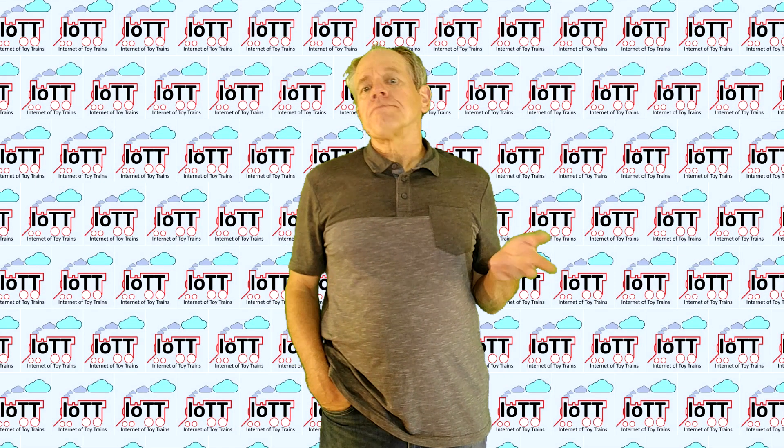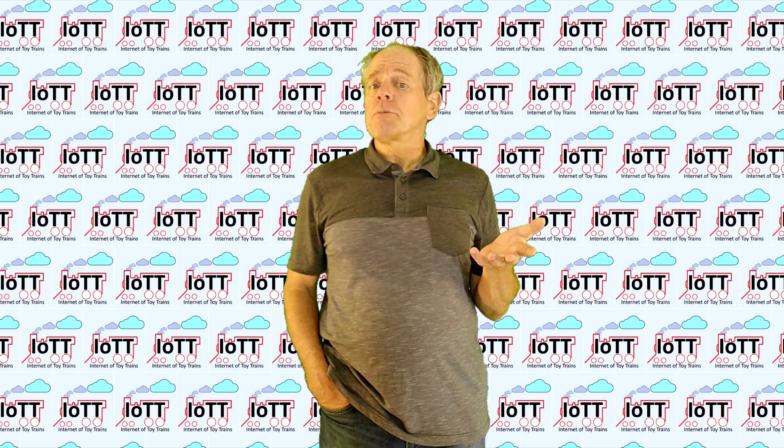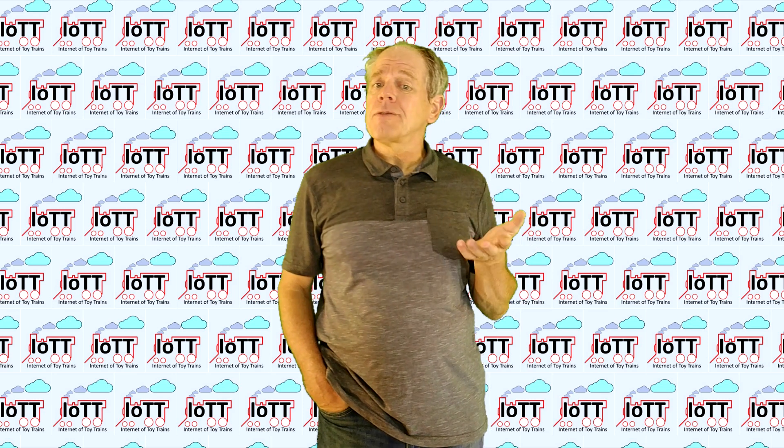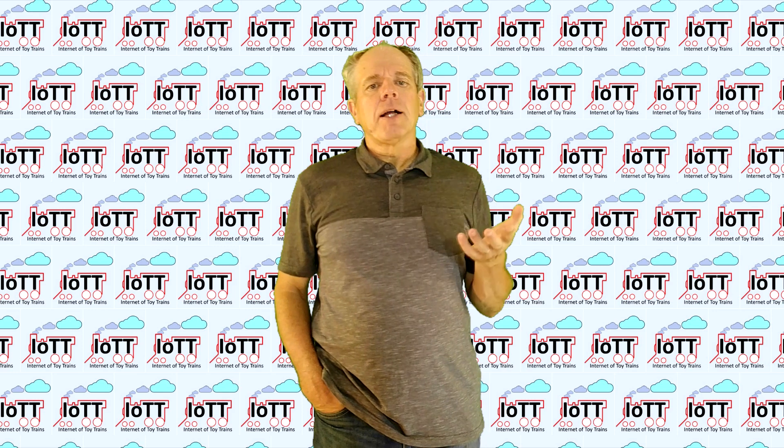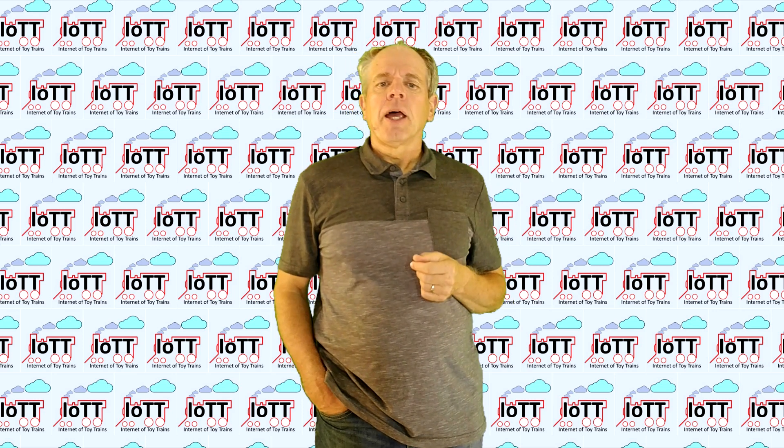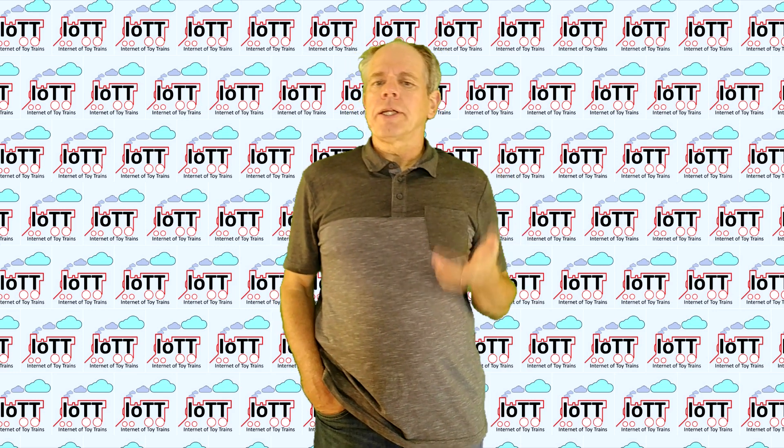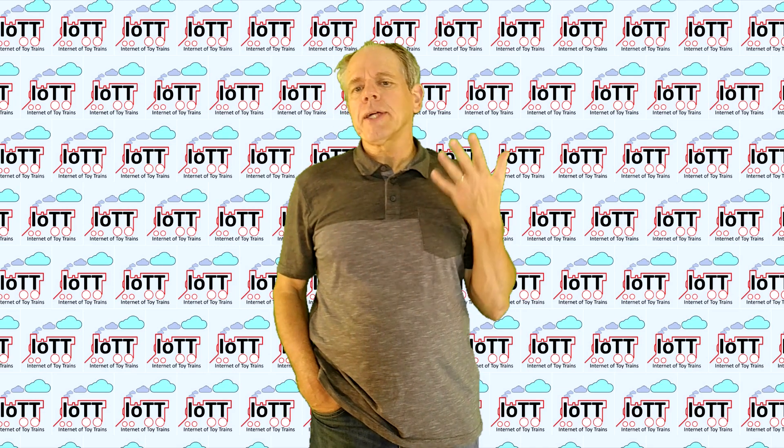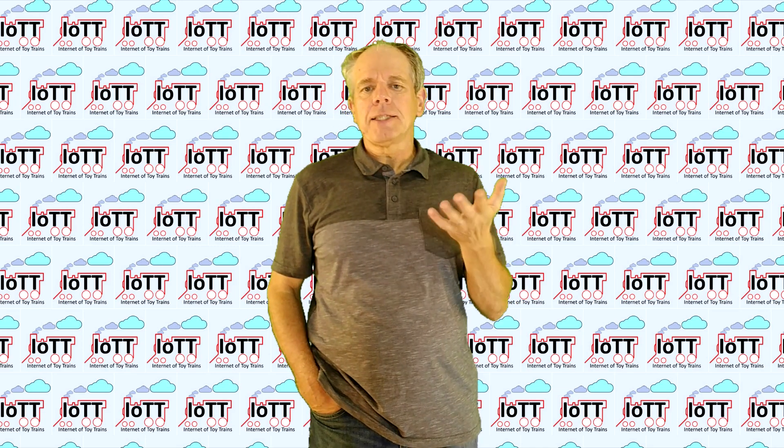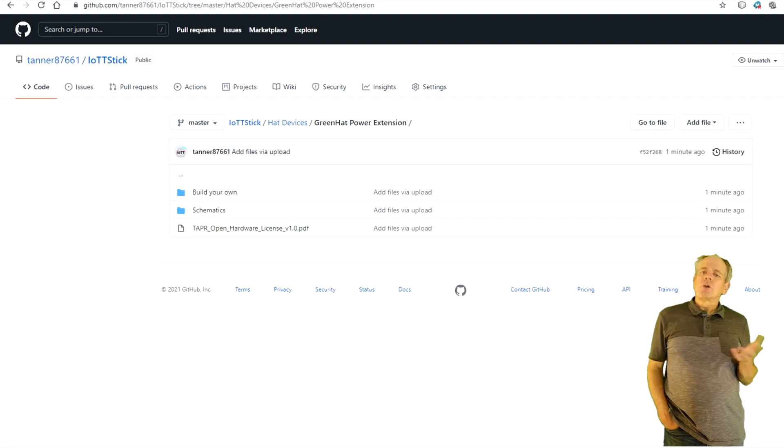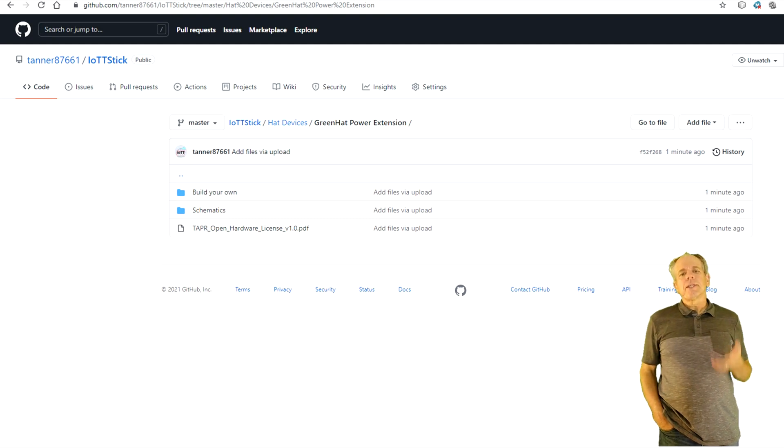So, you think that board would be useful for your layout and want to have one for yourself? Well, you have two options. You can conveniently order it from my Tinder page or you can make one yourself and save some money. To make your own, download the design information from my GitHub page listed below. It has everything you need, the PCB layout, bill of materials and pick and place data for the assembly robot.